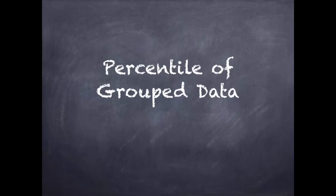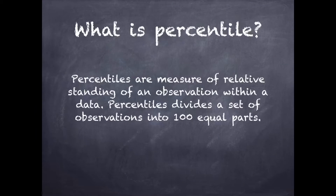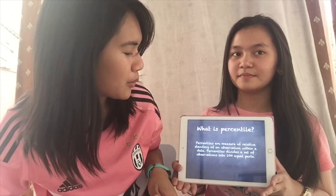First, let's define what a percentile is. Percentiles are a measure of relative standing of an observation within a data. Percentile divides a set of data observations into 100 equal points.